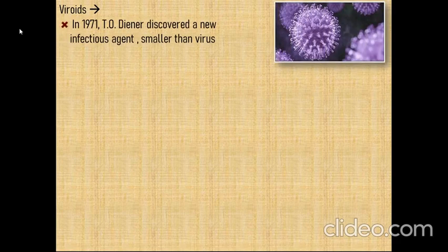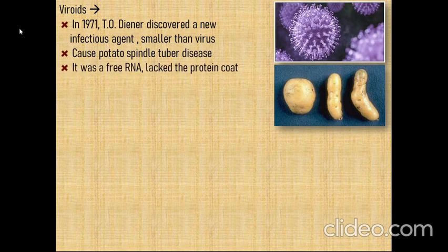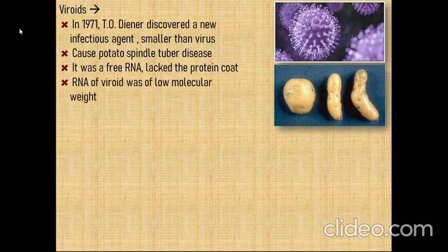Now let's look at viroids, which are different from viruses. In 1971, T.O. Diener discovered a new infectious agent smaller than viruses, which caused the potato spindle tuber disease. It was a free RNA lacking the protein coat or capsid. The RNA of viroids is of low molecular weight compared to viruses.